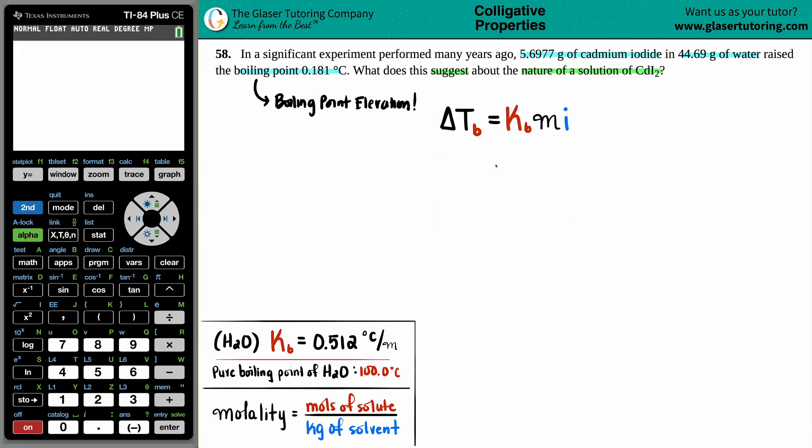Delta TB equals KB times M times I. This Delta TB is the change in the boiling point. So that little triangle just means change, but there's another name for it. Delta TB is also called the boiling point elevation. And they did tell us that the boiling point has rose by 0.181 degrees Celsius. So we know that this number is 0.181 degrees Celsius.